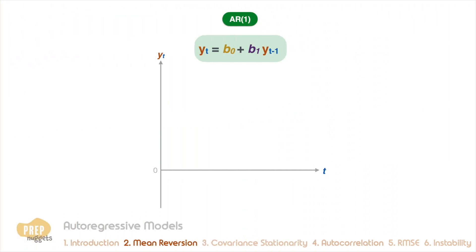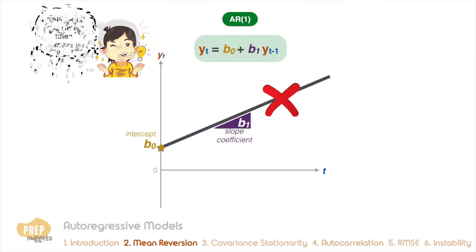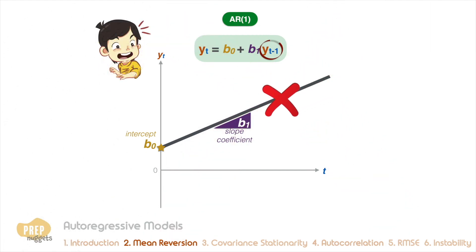Now, one common misunderstanding of AR models is that if we plot the dependent variable over time, we should expect a straight line with b0 as the intercept and the coefficient as the slope. This is totally wrong. Time is not the independent variable in this case. The independent variable is the dependent variable for the previous period.